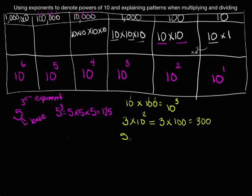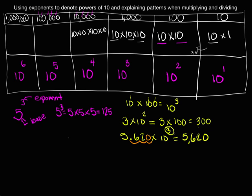This also works for a number like 5.62. Let's multiply that by 10 to the third power. Students should recognize that 10 to the third power is 1,000, so that's 5.62 times 1,000. When we multiply by 1,000, all of the digits shift to the left — essentially it looks like the decimal is moving to the right three places. So our final product would be 5,620.